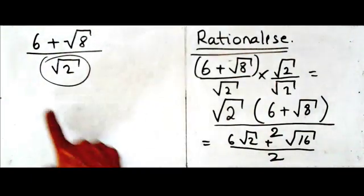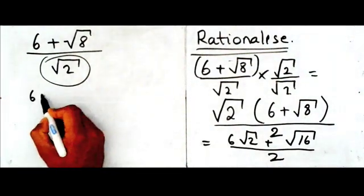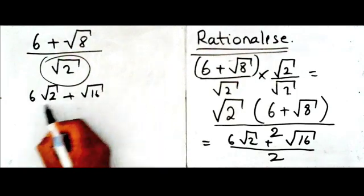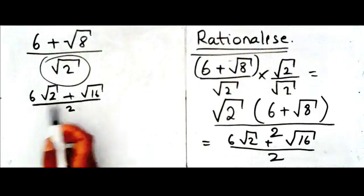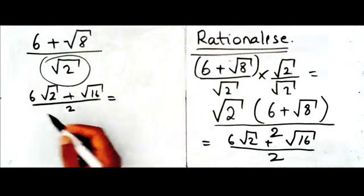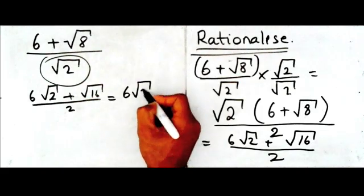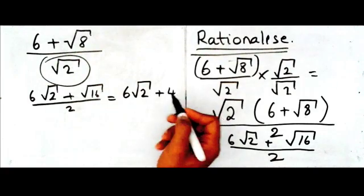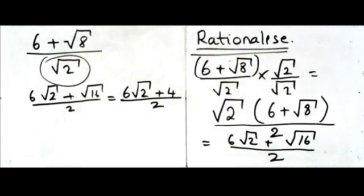Right? I'm going to carry on here. So, so far, we have six root two plus root sixteen over two. So now, let's go ahead and simplify the top. If I simplify the top, six root two, I can't simplify it. So I leave it as it is. Root sixteen is equal to four because four times four is sixteen. And I'm going to divide this by two.